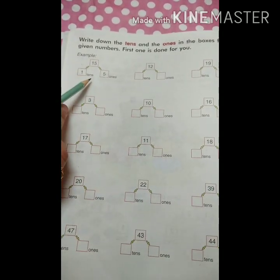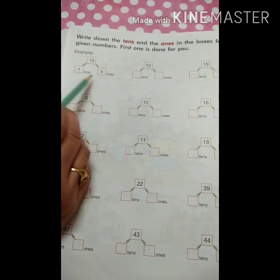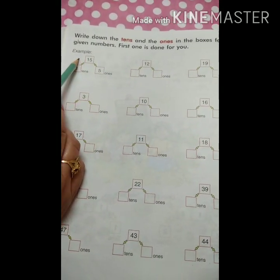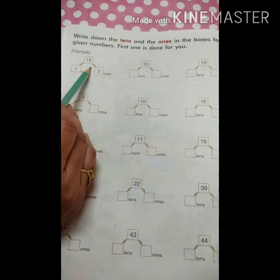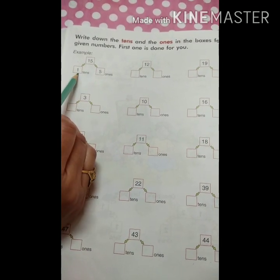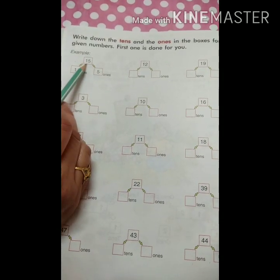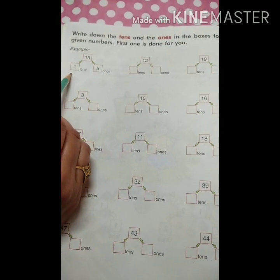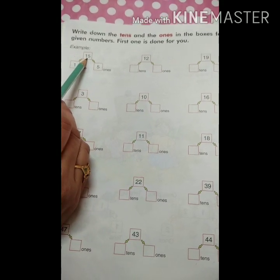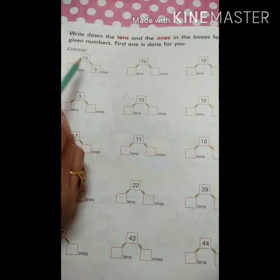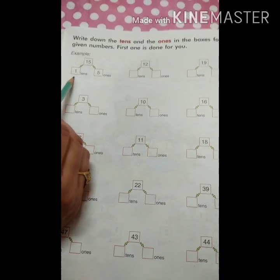अब देखें, इसका जो next page है वो बिल्कुल same है। आपको यहाँ पे कुछ examples और questions दी हुई हैं, आपने इनको solve करना है। Example भी आपको solve करके दी हुई है — यहाँ number है 15। 15 के नीचे 2 boxes बने हुए हैं — आपने बताना है कि 15 में 1s कितने हैं और 10s कितने हैं। 15 में 1s होंगे 5, और 10s होंगे 1।